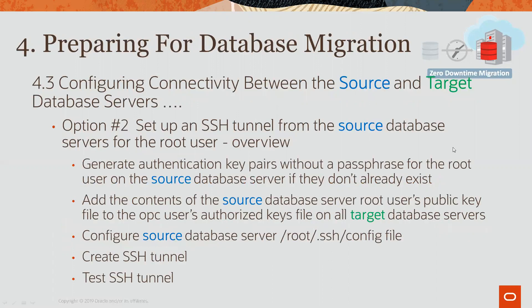Let's talk a little bit about how to set up the SSH tunnel for option number two. It's very straightforward. The first step would be to set up the key pairs with all passphrases. This is identical to what you have done in the past, setting up the connectivity from the ZDM service host to the target and source database servers. However, in this case, you will be setting up connectivity from the source database server root user to the target database server OPC user.